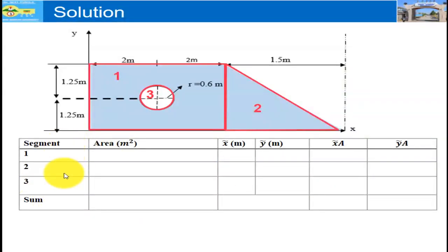Column one is the segments, segment one, two, three, depending on the shapes we have in the composite bodies. Column two is area, column three is the x coordinate or x tilde, and the fourth column is y tilde or y coordinate. The sixth and seventh columns are multiplying x tilde with the area and y tilde with the area.